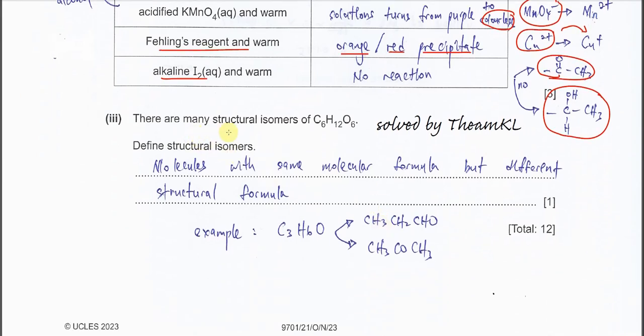Part E(iii): There are many structural isomers of glucose. Define structural isomers. Molecules with the same molecular formula but different structural formula. I'll give you an example. Let's say we have C3H6O, a simple molecule. This molecular formula can form two different compounds with different functional groups: propanal and propanone. These two have different structural formulas but share the same molecular formula. That's why we call these two structural isomers.